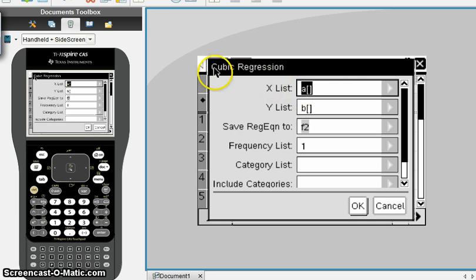In the pop-up window, again, just verify that you're choosing the progression that you intended to. A and B are our two columns. That is correct. The equation is going to be saved in this particular function number. If your function number is different from mine, that's still okay. And go ahead and hit okay.